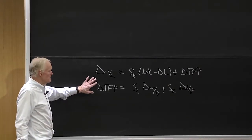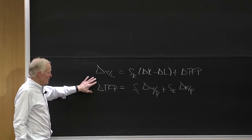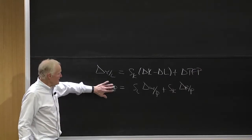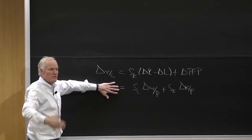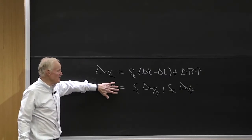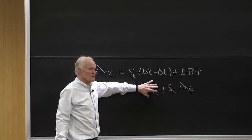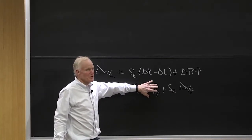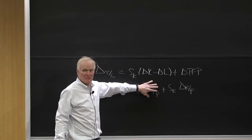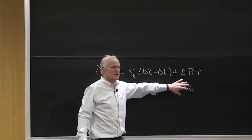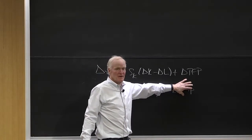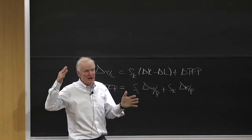It says, look, if I have constant returns to scale, then if I didn't have productivity growth, and this gets back to your point from before, but if I didn't have productivity growth, my ability to increase W over P, increase the real wage, could only come from something else, which would be reducing the real return on capital. Right?